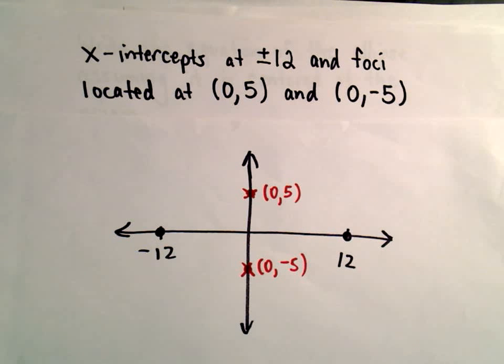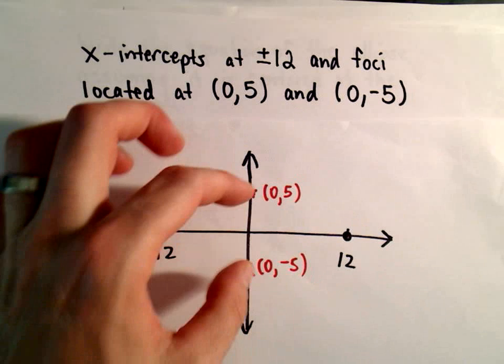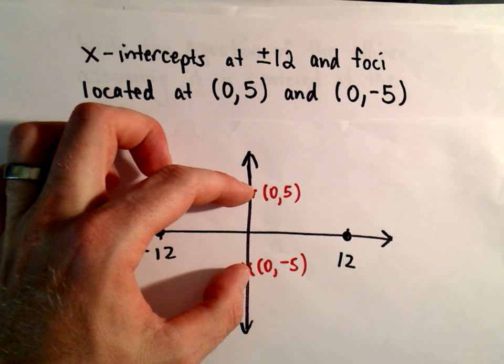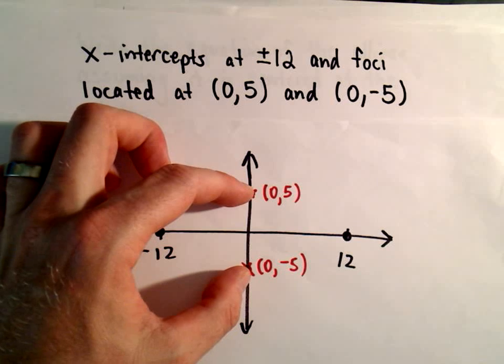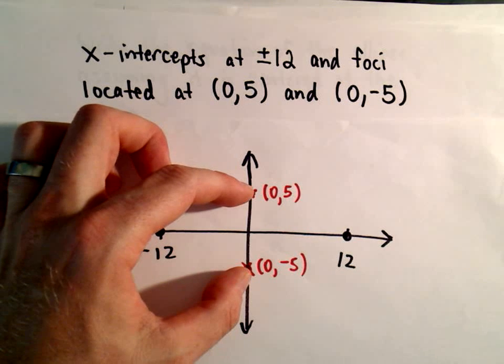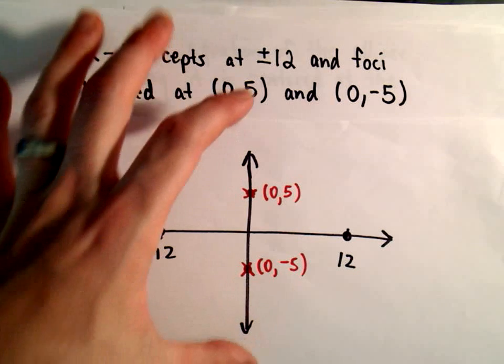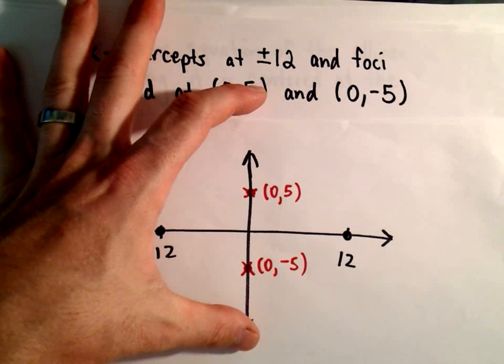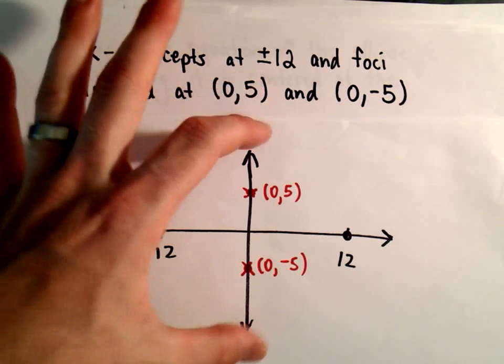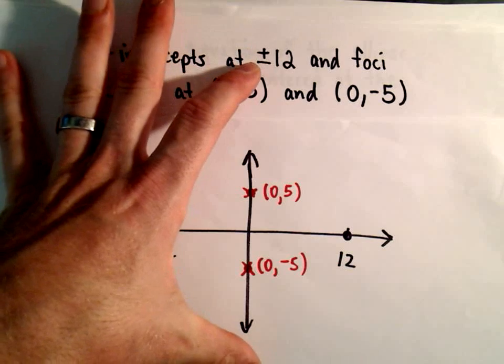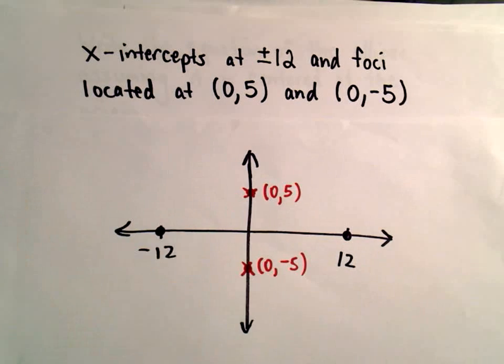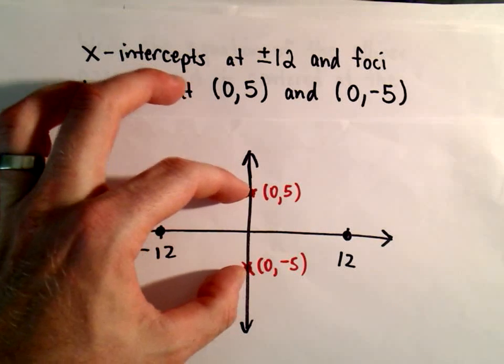So one thing that's important is the foci are always located along the major axis. And I always think about the major axis as being the longer axis, right? That's why we call it the major. So I know it's going to be taller than it is wide in this case, because the foci tell me that.